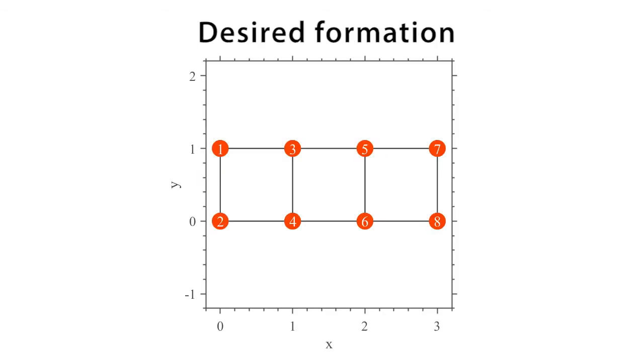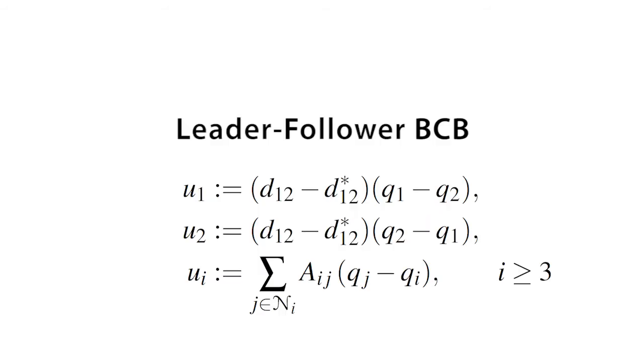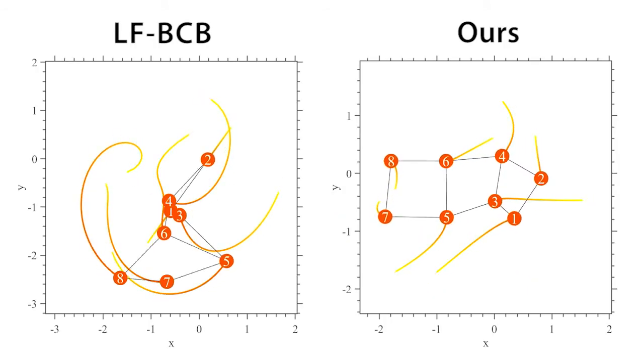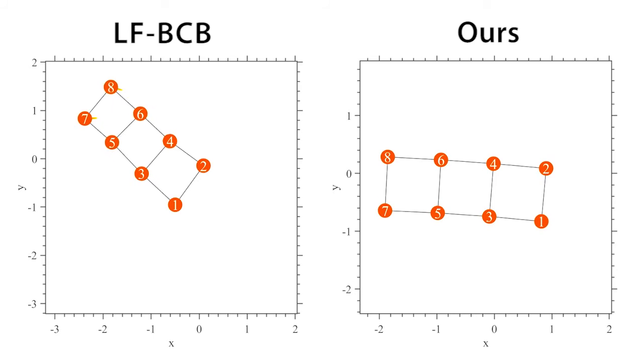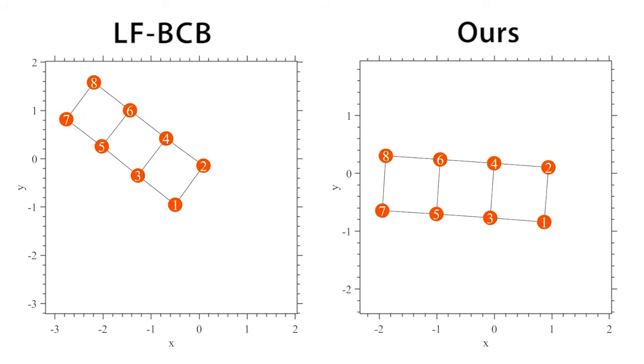In a simulation with eight agents and a rectangular desired formation, we validate and compare our method with a leader-follower BCB approach that can be used to control the formation scale in the BCB strategy. Starting from the same randomly chosen initial positions, both control strategies achieve the desired formation. However, the traversed trajectories are much shorter in our approach.